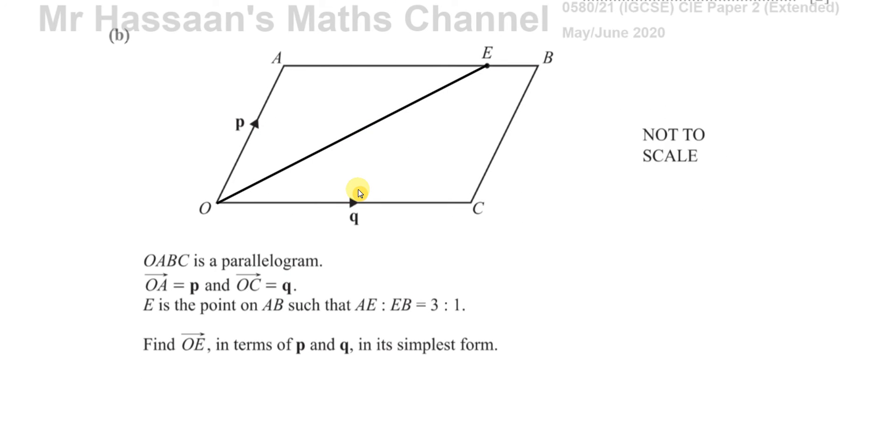So part B says OABC is a parallelogram. Parallelogram means this side is parallel to that side and this side is parallel to that side. That's very important, why? Because that means this line CB is parallel and equal in length to OA, so this will also be the vector P. And from A to B is parallel and equal in length to O to C, so this will also be called the vector Q. That's why that's an important word in this question.